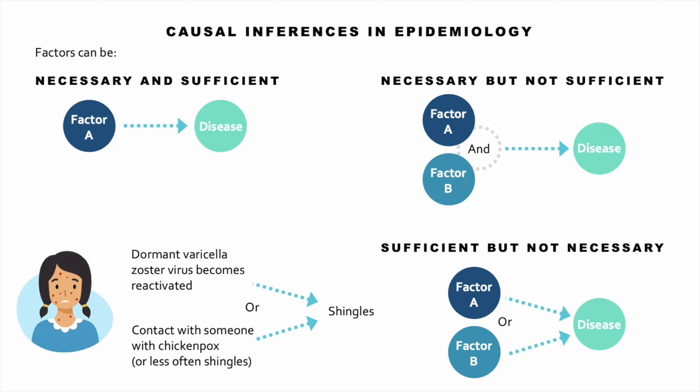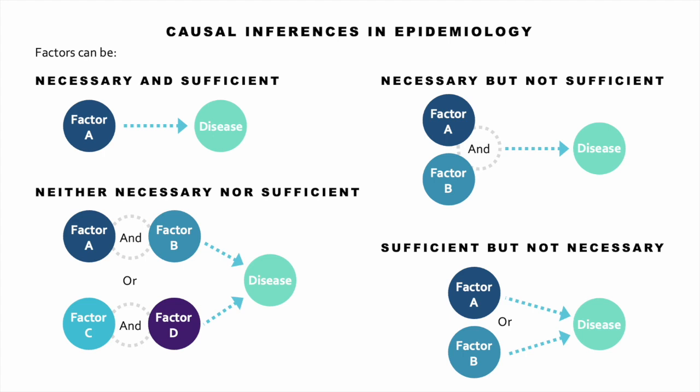If a factor is neither necessary nor sufficient, you can have factor A and factor B and get the disease, or factor C and factor D and get the disease. One example is severe allergic reactions: if someone has a severe penicillin allergy and gets exposed to penicillin, they'll have an anaphylactic reaction; or if someone has a severe peanut allergy and gets exposed to peanuts, they'll have a severe allergic reaction. So anaphylaxis has multiple causes, each of which requires two factors.